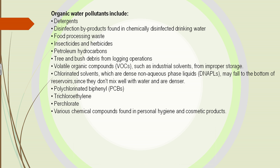Other pollutants include detergents. We have stopped using certain detergents in dishwashers because they were not cleaned out of the water system and gradually moved into rivers, streams, and back to the oceans. Food processing waste, insecticides, herbicides, hydrocarbons — we used to dump tree and bush debris from logging operations as well. All these things were dumped into the water. We now have many more laws and regulations to stop this, which we will investigate in another unit.